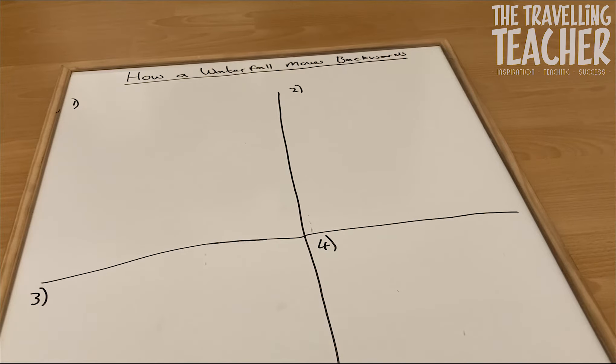Hi everyone and welcome to this really quick GCSE revision video. Today we're looking at how a waterfall moves backwards. Now this is a four-stage process so let's dive straight in with stage one.